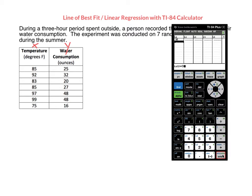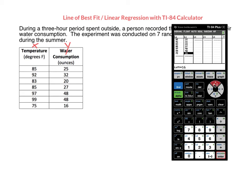After each number, you just click the enter key and that's what saves it. Once you've entered all your x values, you're going to arrow over to List 2 and then enter your y values: 25, 32, 20, 27, 48, 48, then 16. After you've entered all your data, double check to make sure you've typed each number correctly. If you make any mistakes, you can arrow up to the number you typed wrong and change just that number. It looks like I typed everything correctly.